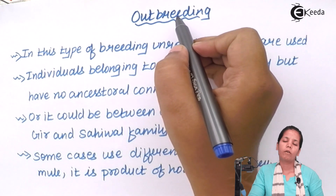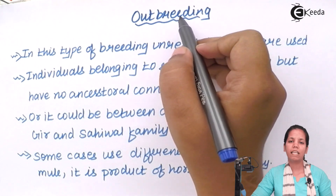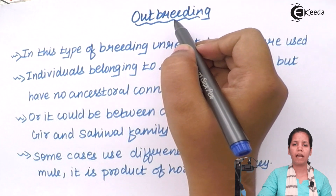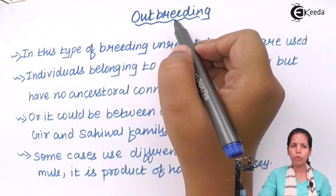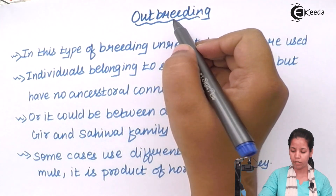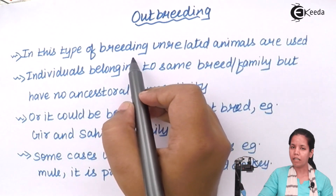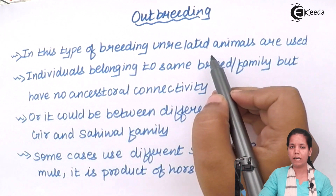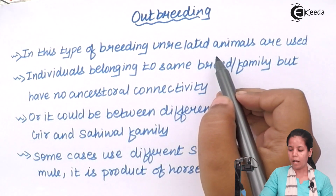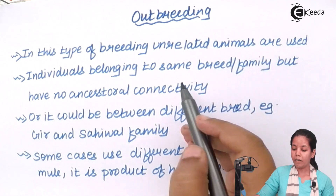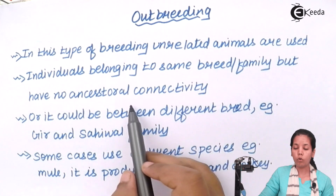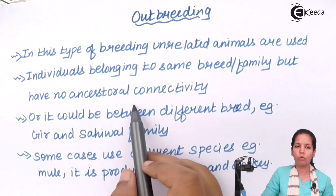In outbreeding, it precisely involves animals which are not of similar ancestral origin. They don't have any similarities in appearance, shape, or size. Unrelated animals which do not have a common ancestral origin are basically used. Individuals may belong to the same breed or same family, but those with no ancestral connectivity are used.